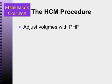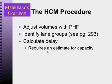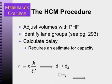So we're going to, number one, adjust volumes with the peak hour factor, just like we did with freeways — volume divided by the peak hour factor gives us the worst case scenario. Then we identify lane groups using page 293; there's a nice table there that shows you how to do that. Then we calculate delay, which requires an estimate for capacity. The capacity equals saturation flow times the green-to-cycle-length ratio. That gives us delay values, which gives us level of service — that's what we're looking for.